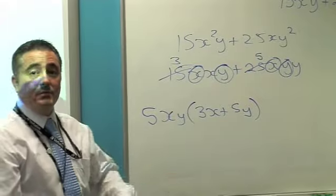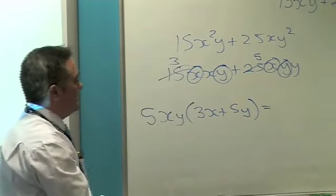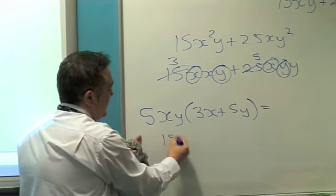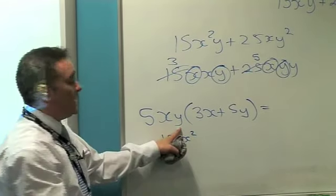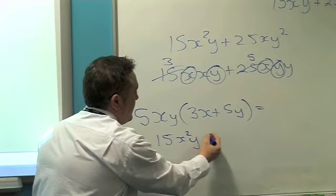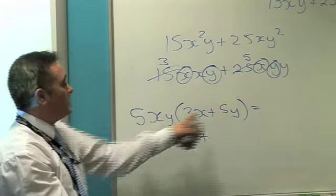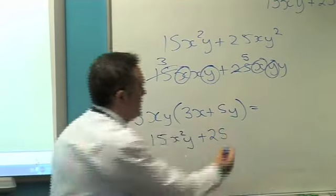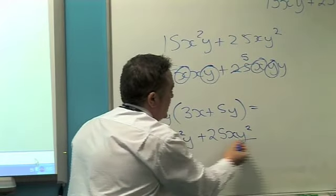Double check it. And it's good expanding brackets practice. Let's expand it out. 5xy times 3x. So 5 times 3 is 15. x times x is x squared. And I'm just left with y. Plus 5xy times 5y. 5 times 5 is 25. x. y times y. y squared.